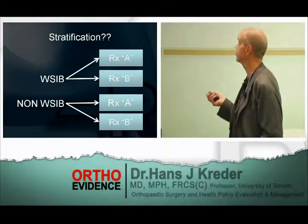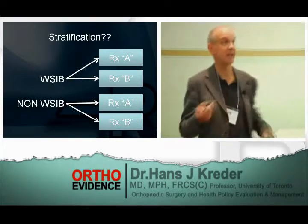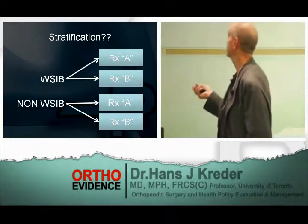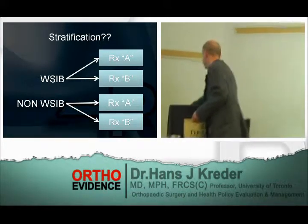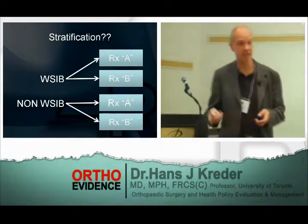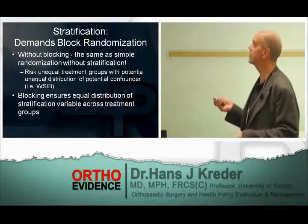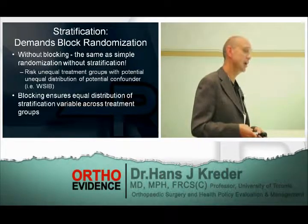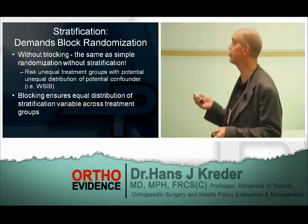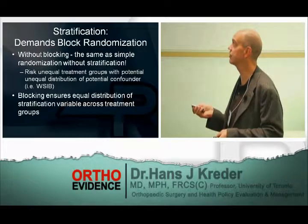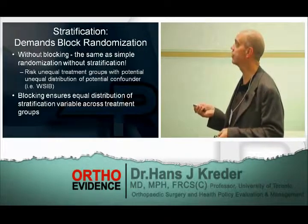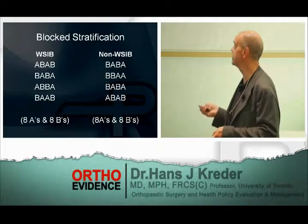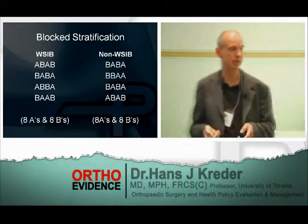Because unless you're ensuring that the proportion of A and B is equal within each group — and that can only be done by blocking — you can still have an unequal number of patients in treatment A. You can have nine patients in treatment A and one in treatment B, and the same for the non-WSIB group. So at the end of the day, you can end up with an unequal distribution.